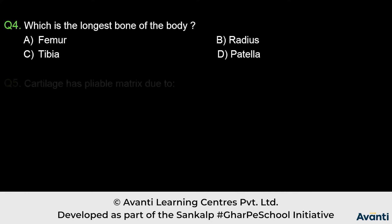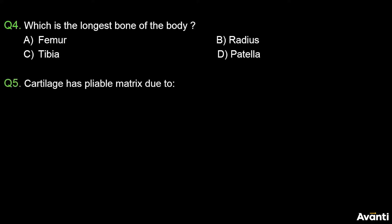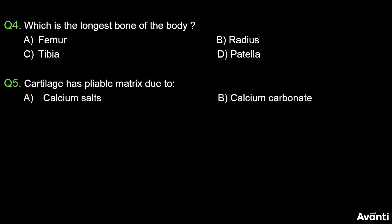Question number 5: Cartilage has a pliable matrix due to — Option A: calcium salts, Option B: calcium carbonate, Option C: chondroitin salts, Option D: sodium chloride.